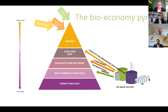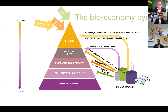We can extract compounds from these materials and make bioplastics, but that's not a food-to-food circular solution. We are also looking at ways to produce protein for animal feed directly from the organic materials. Plants with pharmaceutical or probiotic properties are of the highest value. Simultaneously, we can sequester carbon by making biochar to put in the ground.